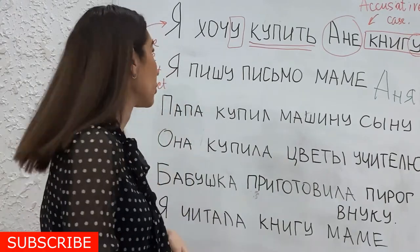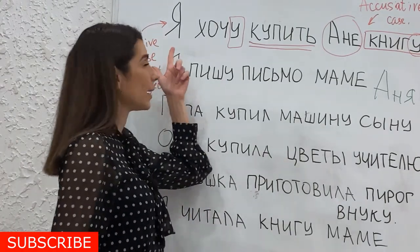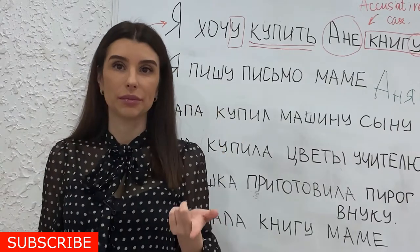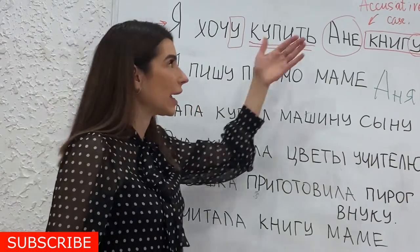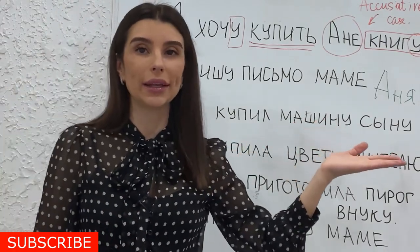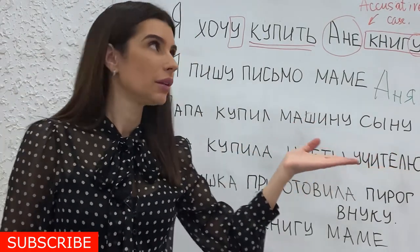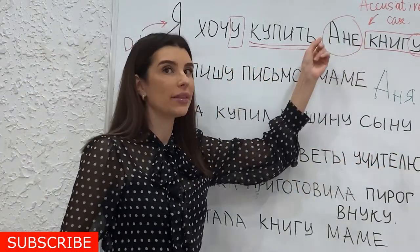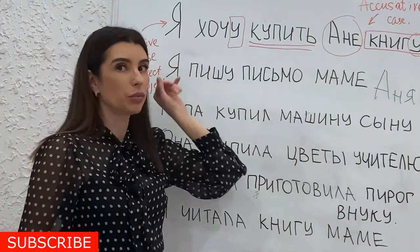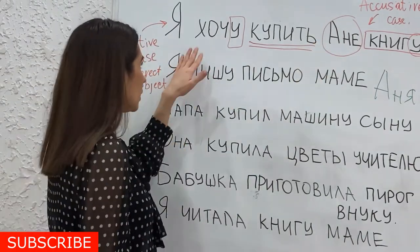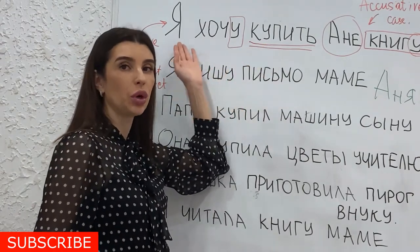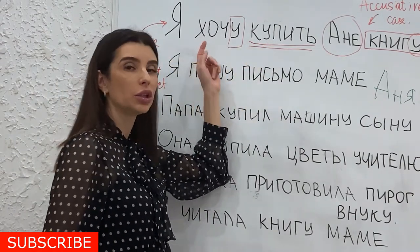Have a look: Я хочу купить Анне книгу. So I want to buy the book for Anna. You can see two verbs here: хочу купить — I want to buy.